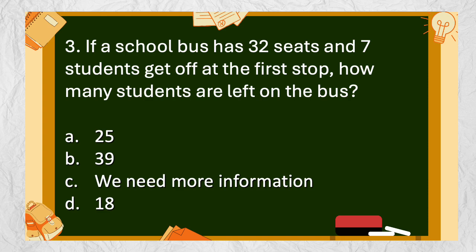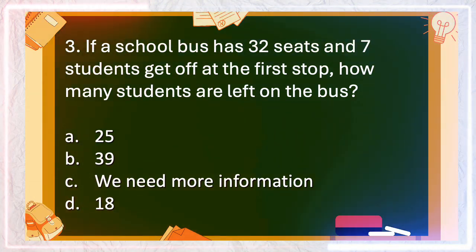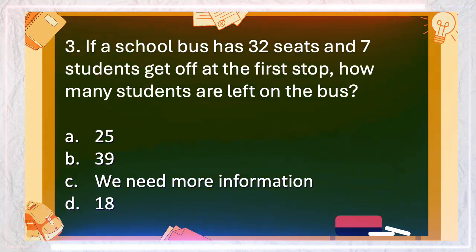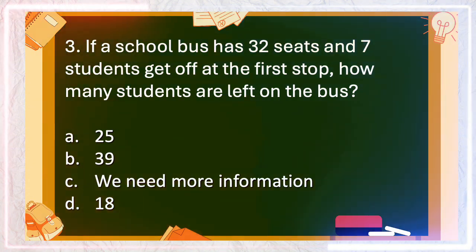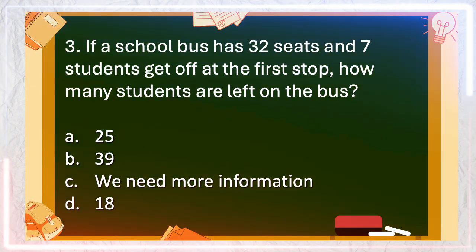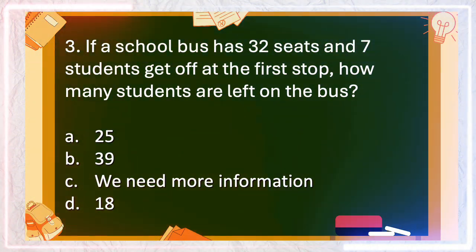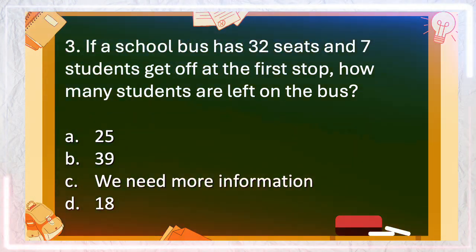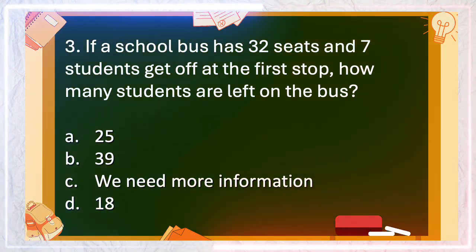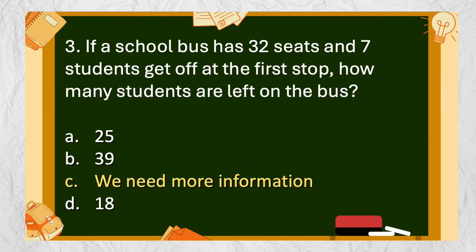Number 3: If a school bus has 32 seats and 7 students get off at the first stop, how many students are left on the bus? A. 25, B. 39, C. We need more information, D. 18. The answer is C. We need more information.